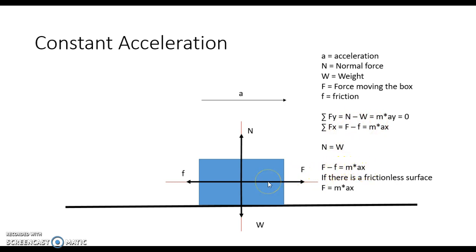Now, if we deal with a frictionless surface — and remember in real life there's no truly frictionless surface, but we may model a system as frictionless, like an air hockey table where air pushes the puck upward giving it minimal contact — then the force pushing the box is equal to mass times the acceleration in the x direction. That gives us our constant acceleration.